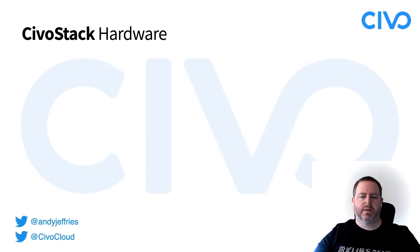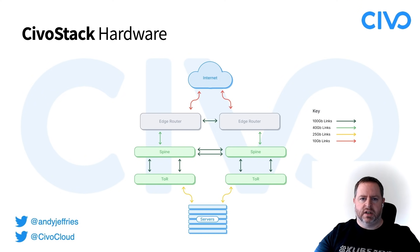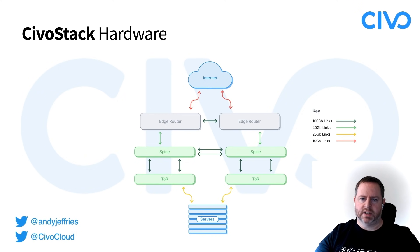Here you can see the network diagram for what we've built. We have racks of servers, with top-of-rack switches connected to spine switches connected to the edge routers. Every layer uses at least 10-gigabit networks all the way out to the internet — internally much faster — and there's no single point of failure. Any server has multiple routes to get out to the internet as well as communicate internally.